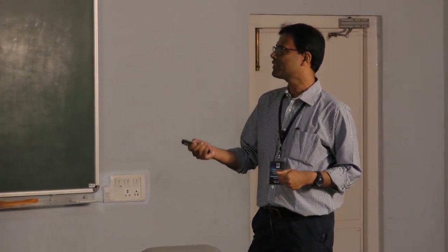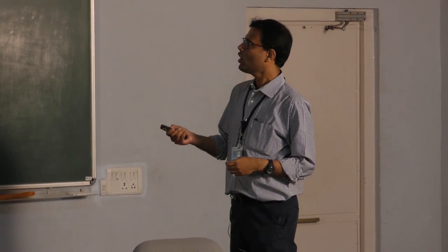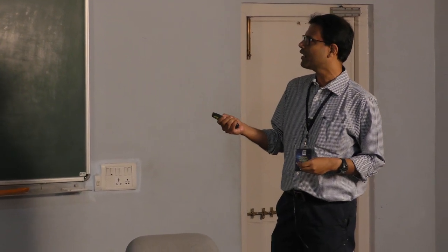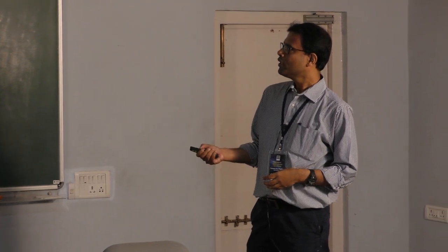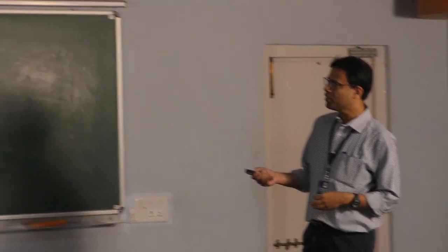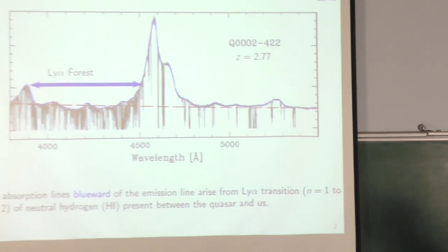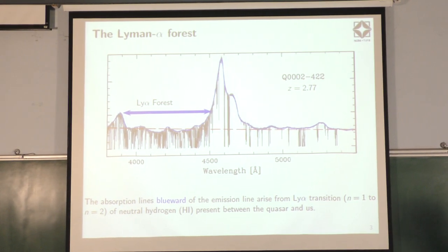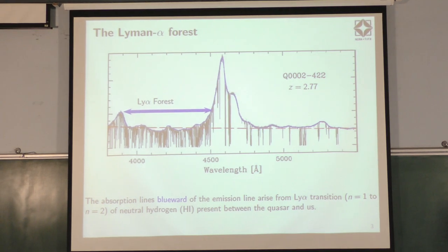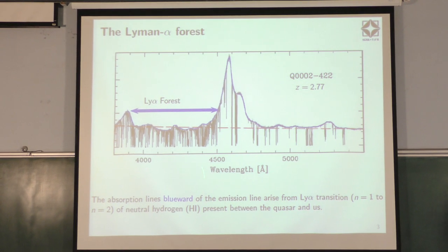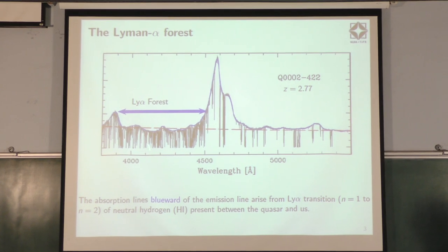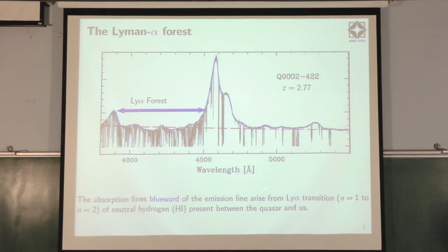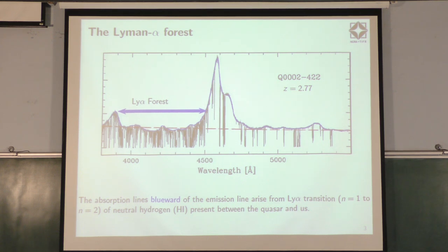This shows what the Lyman alpha forest is. This is a spectrum, flux versus observed wavelength of a quasar sitting at around redshift three. This is the so-called Lyman alpha emission line. Blueward of that you can identify the quasar continuum, this blue line, which is what we would have seen if there was nothing between the quasar and us. But you see lots of absorption features, all these absorption lines. This is arising because of the Lyman alpha transition of neutral hydrogen H1 present between the quasar and us.